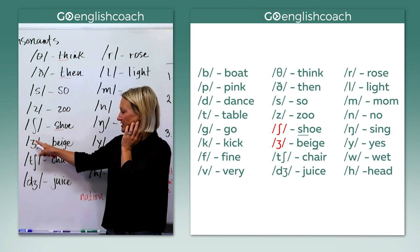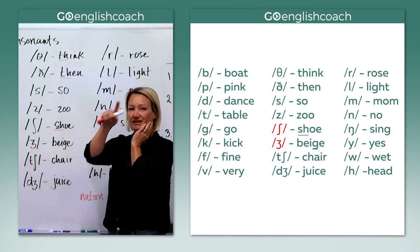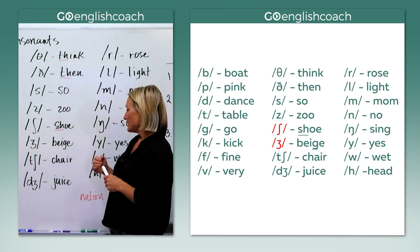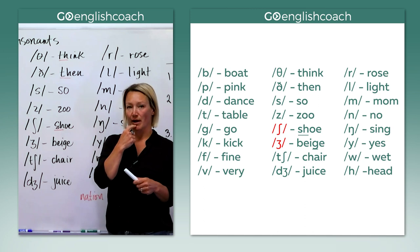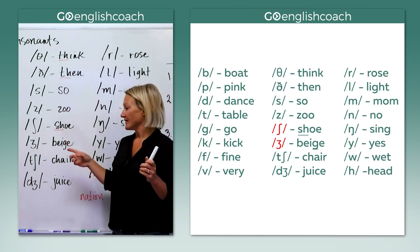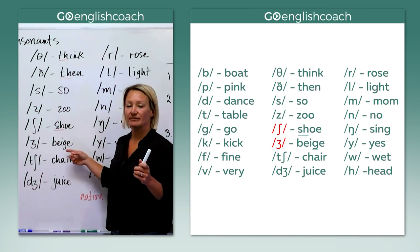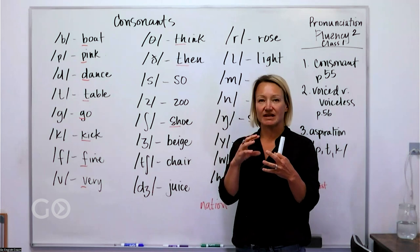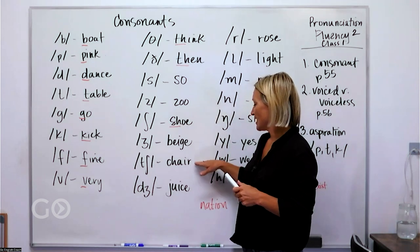So sometimes this SH sound is created by a T. Those are kind of the two most common ways to spell it. So shoe and then beige, this is the symbol here, so it's kind of like a three or like a Z with a big curve on the bottom of it and these two come in the same place in your mouth as well. So we've got SH and then this one is beige. Same position, the way we make the sound is in the same place.